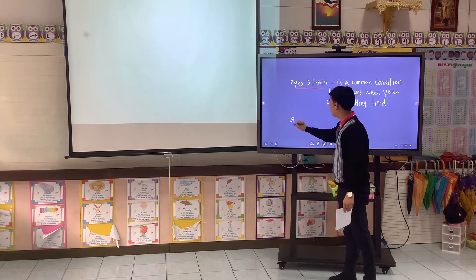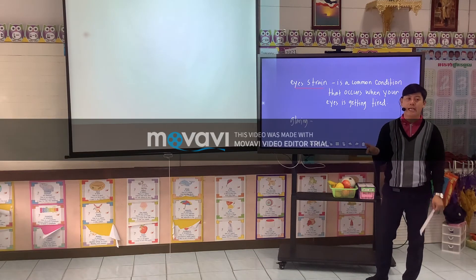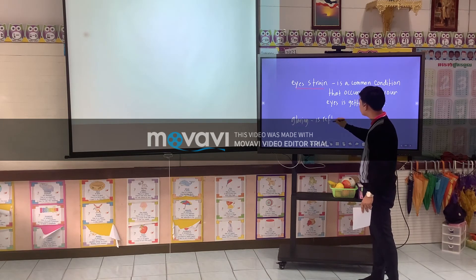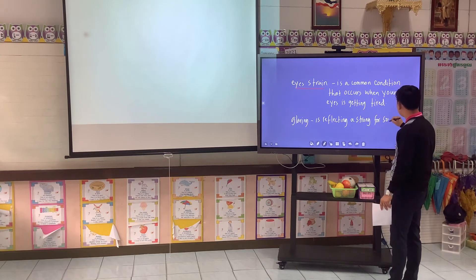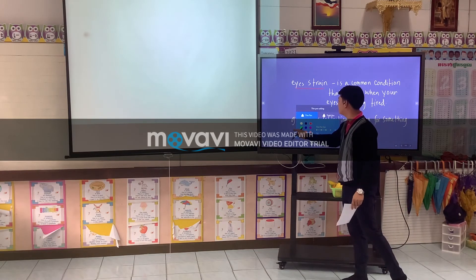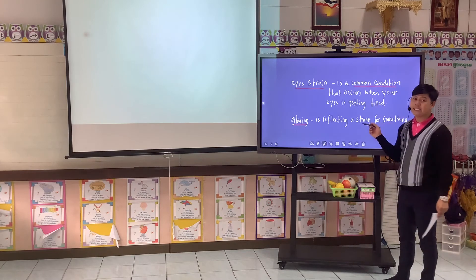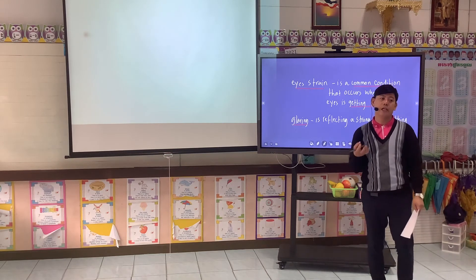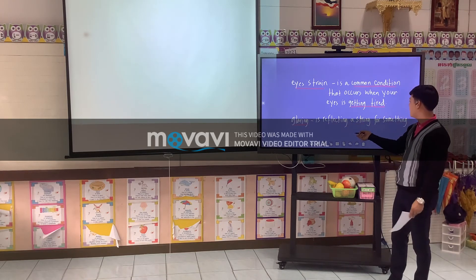How about glaring? This is a difficult word. The word glaring means reflecting a strong light from something. Glaring — reflecting a strong light from something.